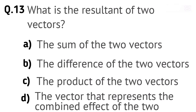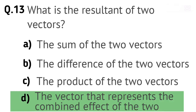Question 13. What is the resultant of two vectors? Options: A. The sum of the two vectors. B. The difference of the two vectors. C. The product of the two vectors. D. The vector that represents the combined effect of the two vectors. Right answer is D. The vector that represents the combined effect of the two vectors.